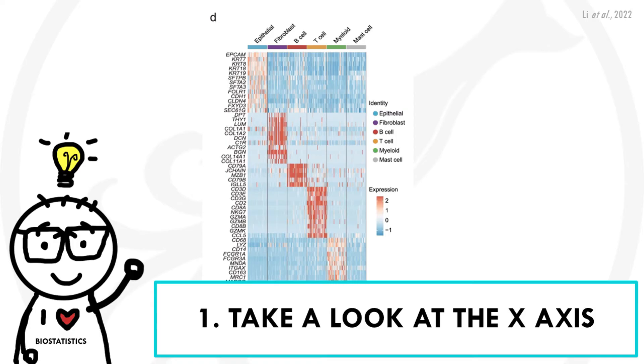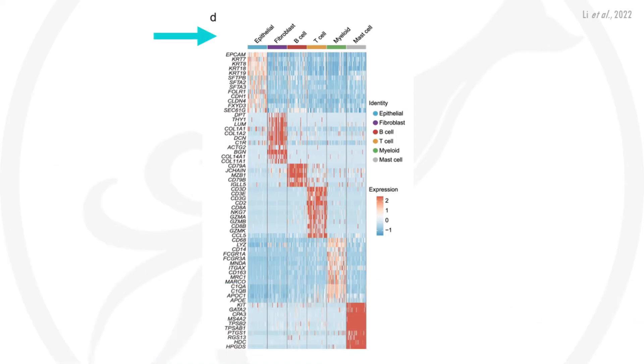First of all, we need to check the x-axis. In general, every column of the heatmap represents a different sample. That can be cells, it can be patients, and there should be some kind of label to tell you what the x-axis represents. And this will also give us an idea of which samples are more similar to each other. In this case, it looks like each column is a cell and they were also clustered together according to cell type.